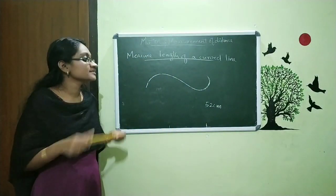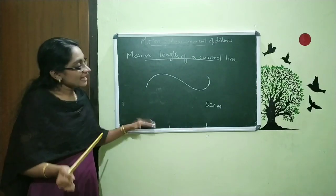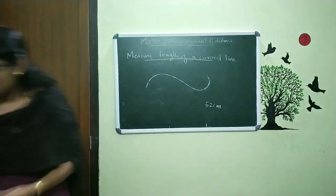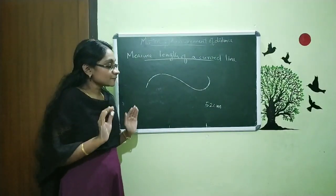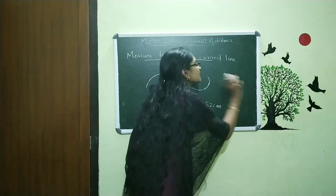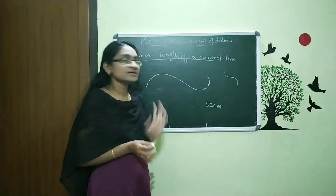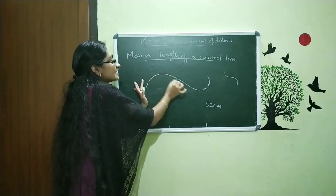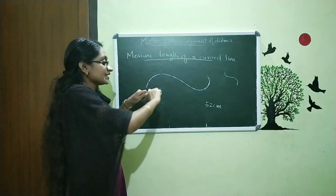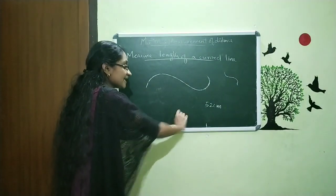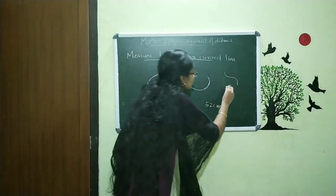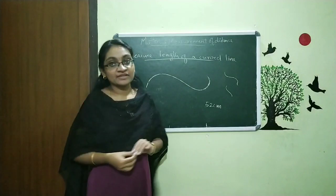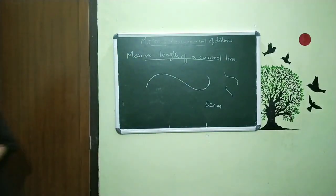My scale is only 30 centimeters, so it is impossible to take it using this small scale. If I have a longer scale, it is possible to take the length. The length of this curved line is 52 centimeters. Now you just want to pause the video, take your notebook and draw some curved lines, take one thread and measure the length using the same procedure — taking the thread, giving a knot, putting it on the curved line, then placing that thread on the scale and noting the measurement. This is the method to measure the length of a curved line.